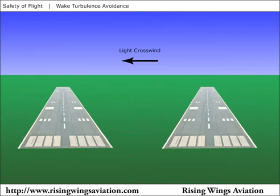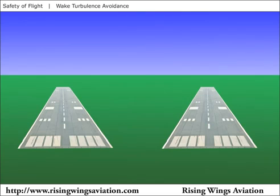Stay above the flight path of the previous arrival and land beyond its touchdown point. A light quartering tailwind is particularly hazardous with regards to wake turbulence since it brings the upwind vortex right down the runway and holds it in place over the runway.